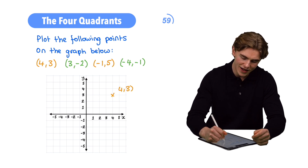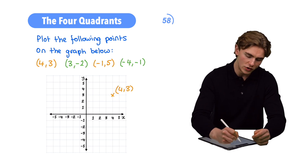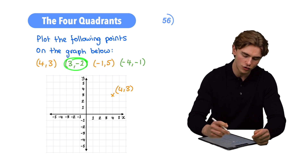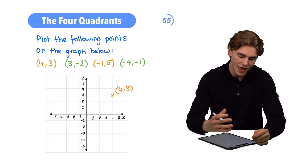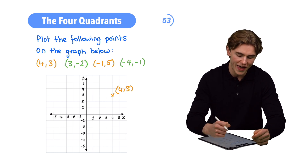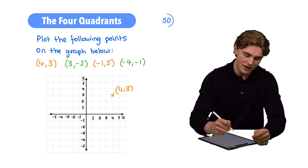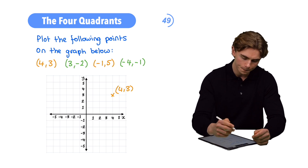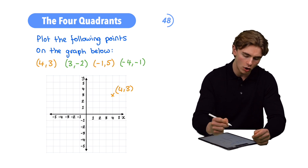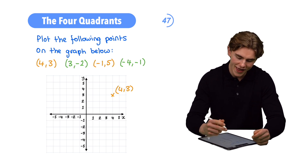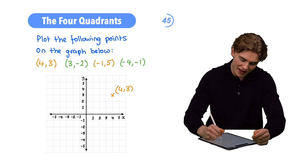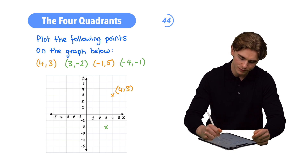What about our next coordinate, which is going to be (3, -2)? This time we have a positive value of x and a negative value of y, so we're going to be in the positive-negative quadrant. We go along the corridor to 3 and down the stairs to minus 2. That leads us to the point (3, -2).